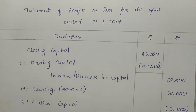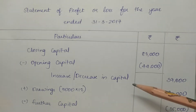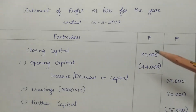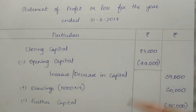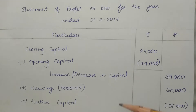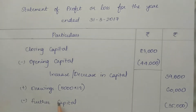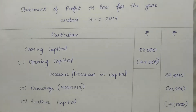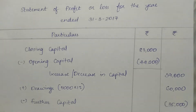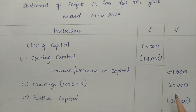Drawings are 5,000 rupees per month for a full year, totaling 60,000. The additional capital introduced from the private sale of investments is 35,000. These are added and deducted respectively to arrive at the adjusted profit figure.